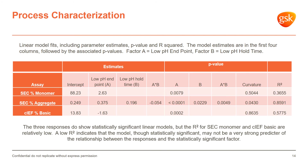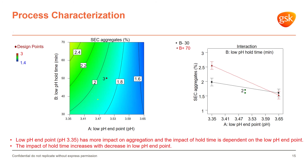Here are the results for the process characterization DoE. Two important factors were identified: low pH endpoint and low pH hold time. These two factors had significant impact on percent monomer, percent aggregate, and CIF percent basic peak. However, the model fit confirmed that percent aggregate was the only parameter with significant power to predict the relationship between low pH endpoint and low pH hold time.